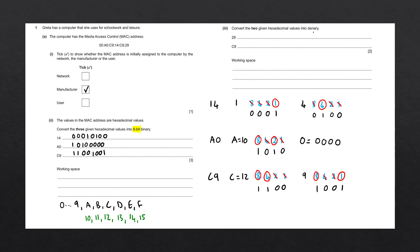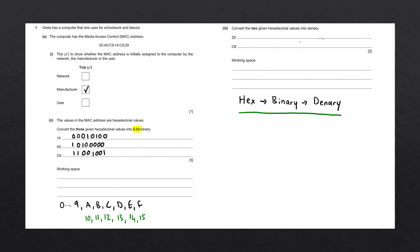Moving on with the next question. Convert the two given hexadecimal values into denary. The method we're going to use is to first convert our hexadecimal value into its binary form, and then we're going to convert it into denary. Looking at the number C8, to convert this directly into denary is possible. However, the method uses quite a bit more math than is necessary.